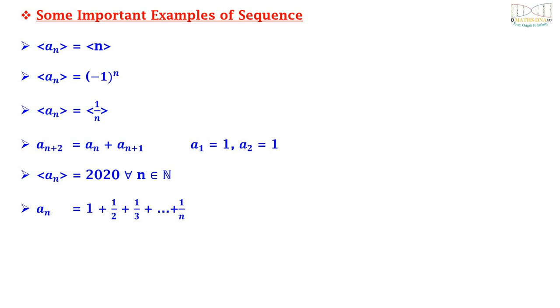Further examples include a_n = 1 + 1/2 + 1/3 + ... + 1/n, and a_n = cos(n) or a_n = sin(n).